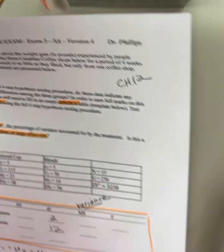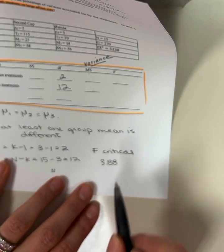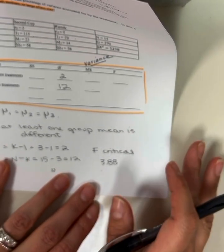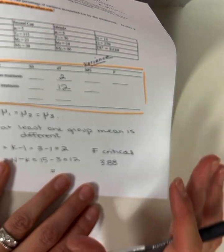Okay, so our F critical is 3.88. Those are our degrees of freedom. If the value we calculate is larger than 3.88, then we are going to reject the null and accept the alternate.